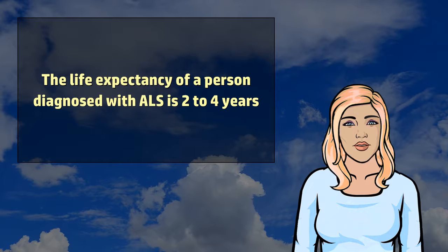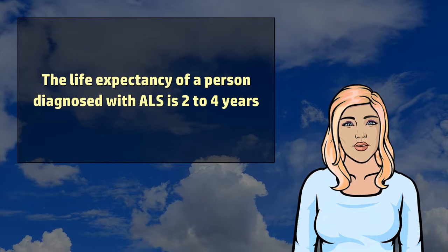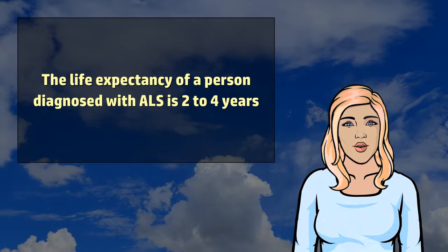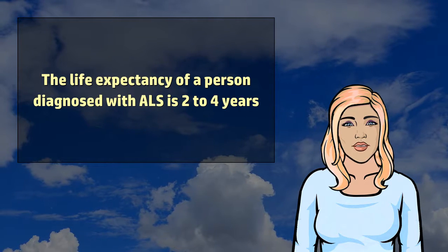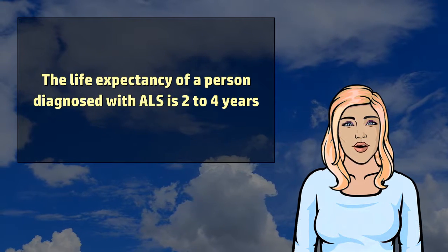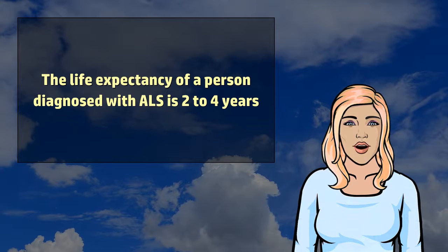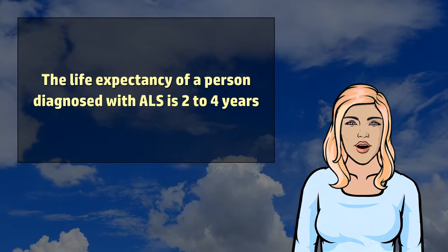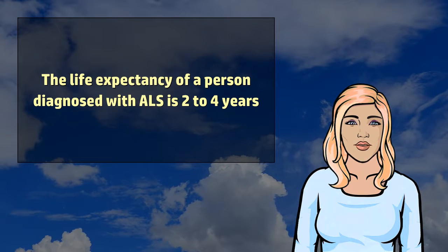The average survival from onset to death is 2 to 4 years. Only about 10% of people with ALS survive longer than 10 years. Most die from respiratory failure.